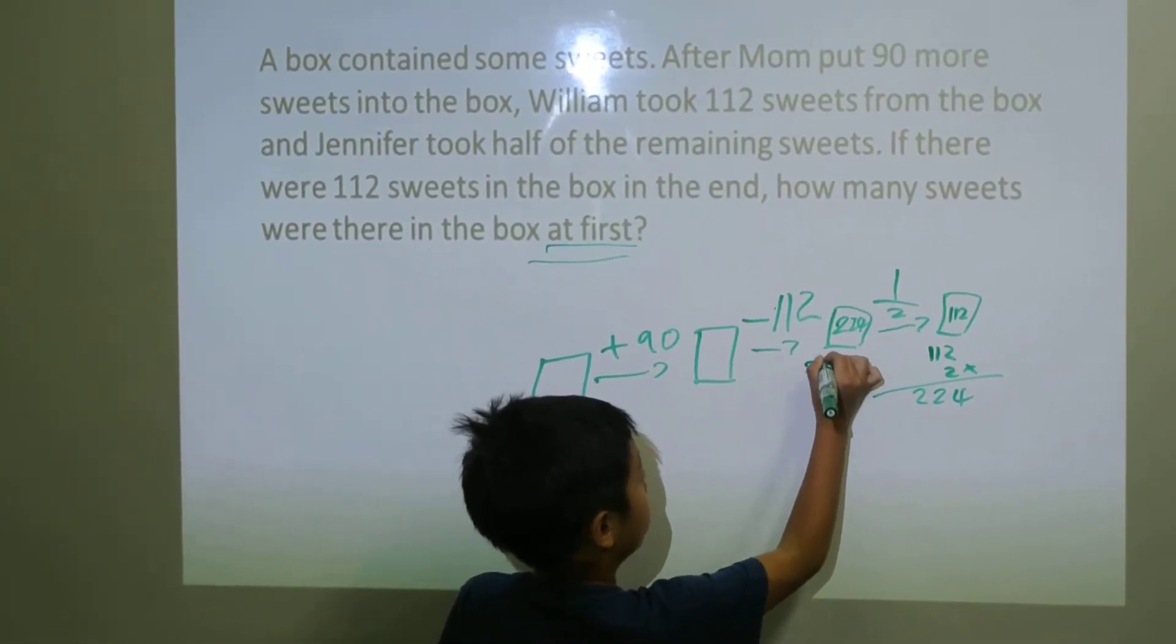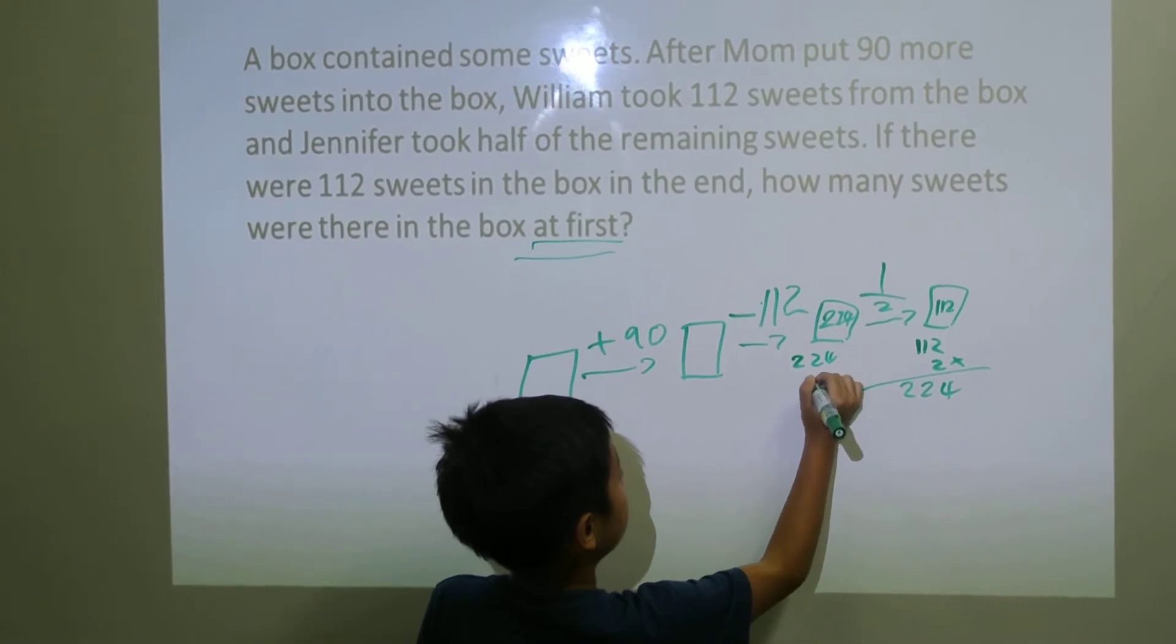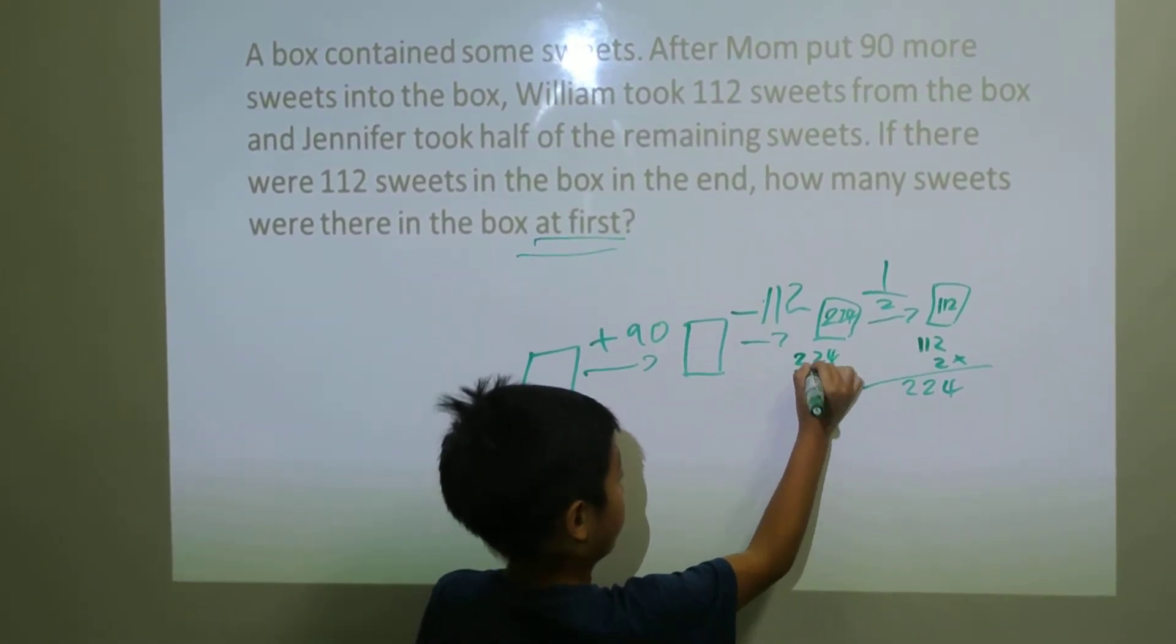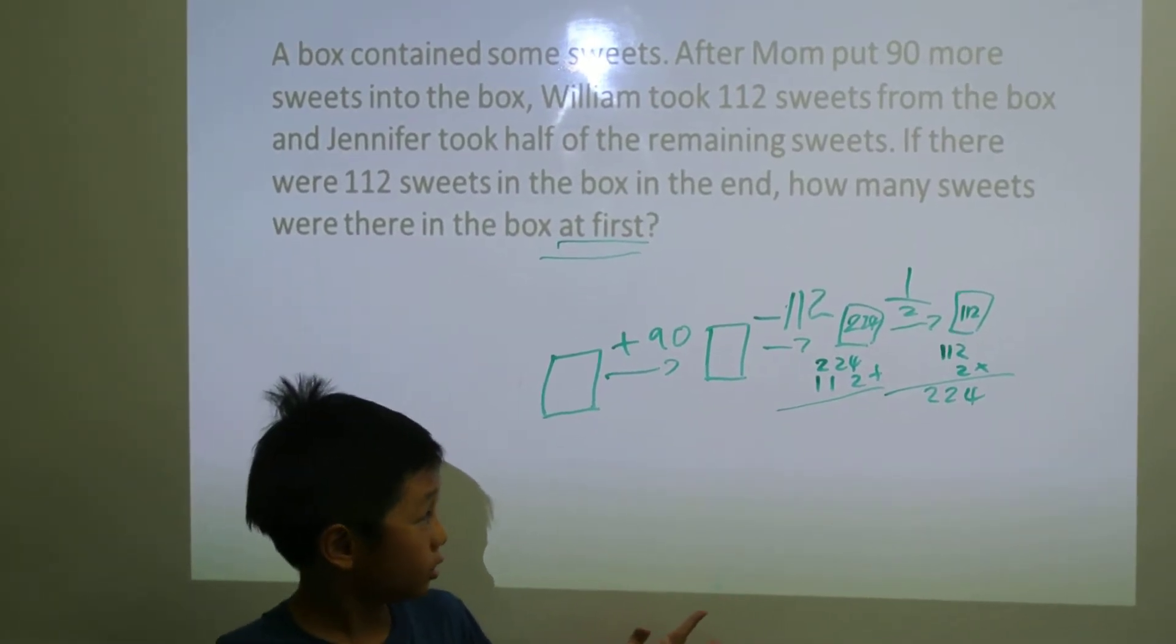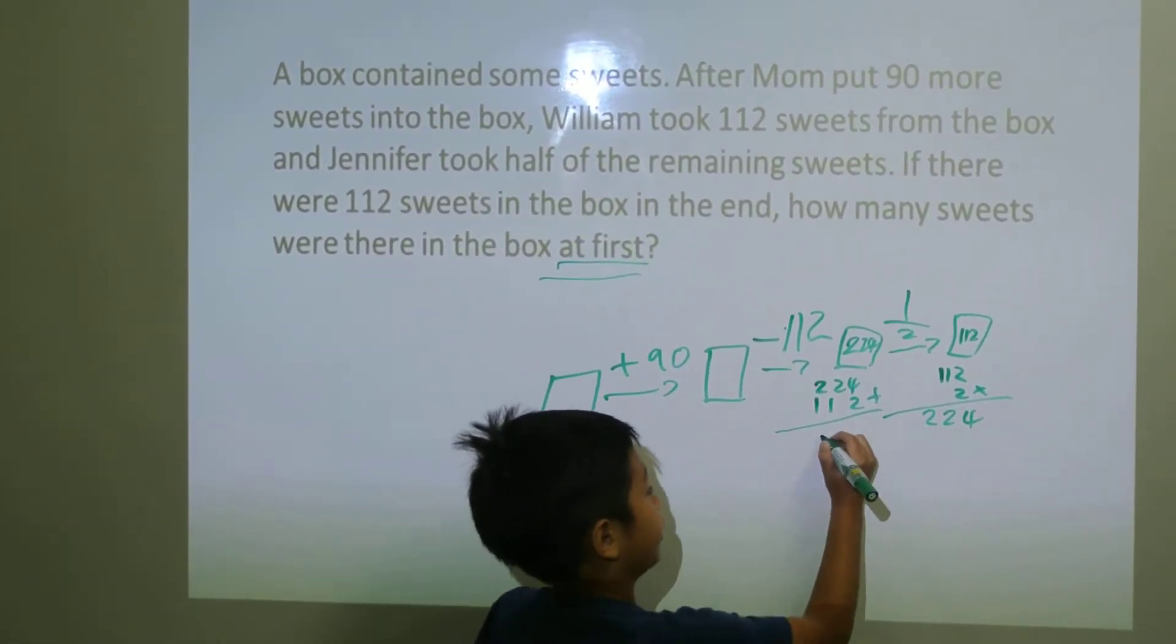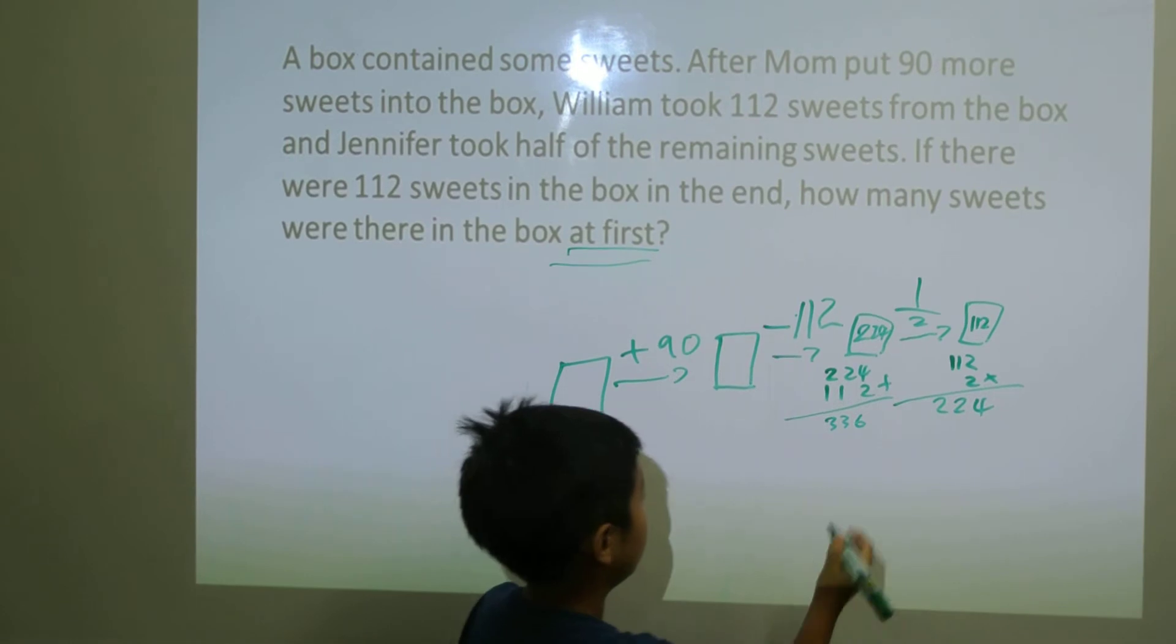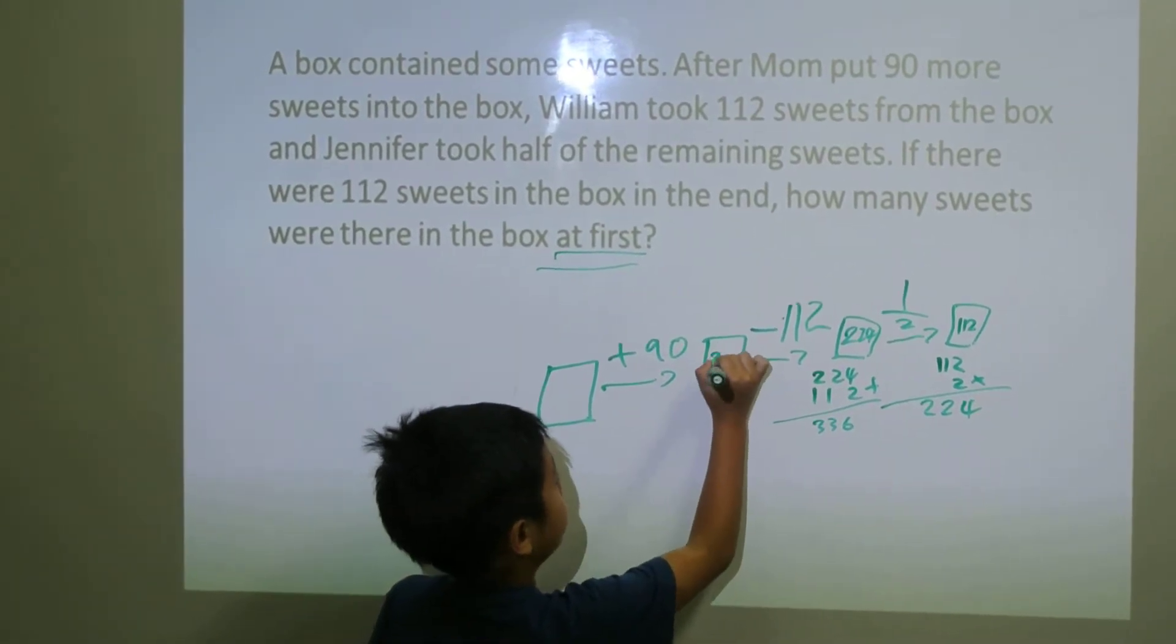Now 224 plus 112, which equals 336. So we put 336 here.